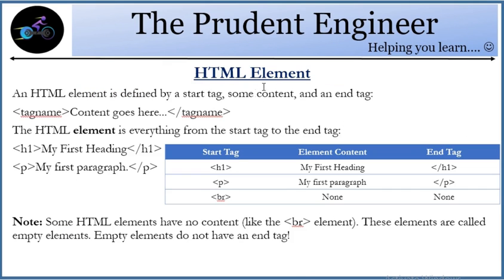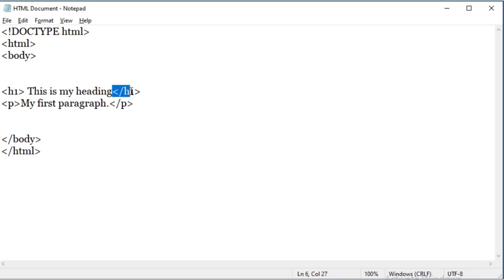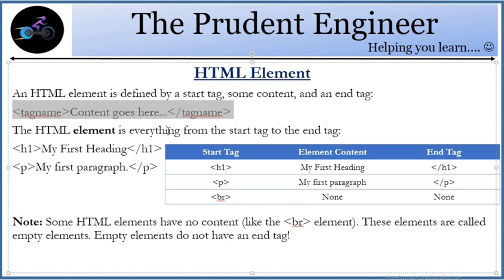Now let's talk about HTML elements. An HTML element is defined by a start tag, some content, and then an end tag. There's the tag name, then we write the content, then we use a forward slash before the tag name to close it. For example, this is the H1 tag — then my content inside — then we use the forward slash to close the statement, and this is how 'This is my heading' appears.